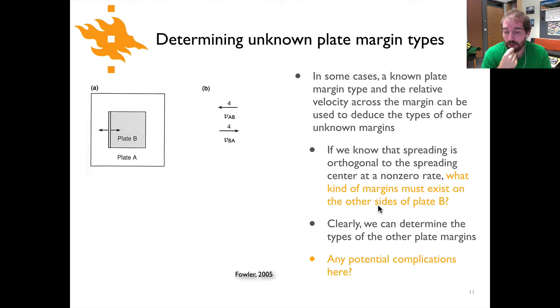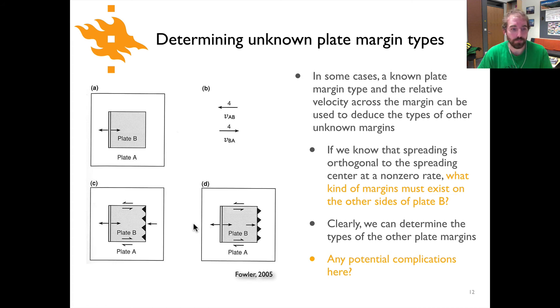Are there any potential complication you can see in this situation? Is there anything that we might not know? Well, one thing we don't know is the orientation of the subduction zone. We don't know whether plate A is being pushed beneath plate B or plate B is being subducted beneath plate A, and with the information that we have there's simply no way we could know that. But as we expected, we have transform boundaries on the top and bottom and we know that we've got a subduction boundary somewhere on the right side of plate B.